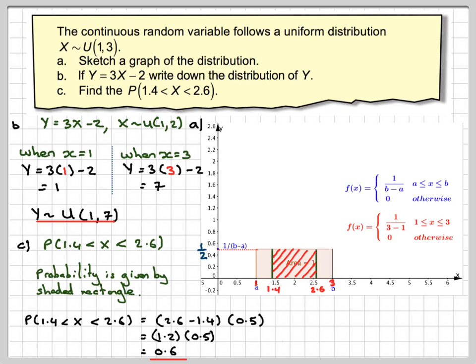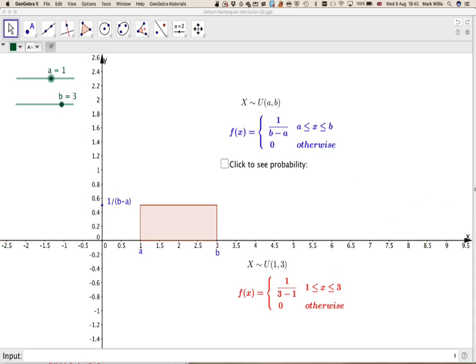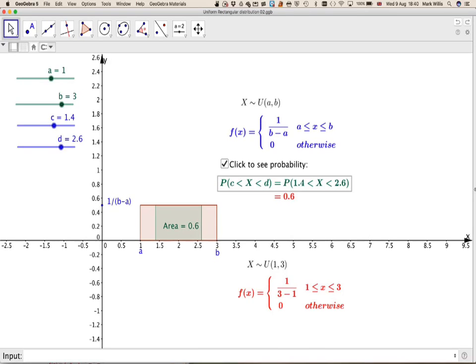That also can be represented on the GeoGebra applet. If you click here, it will give you the probabilities. And you can change the probabilities using these sliders if you wanted to. Just make sure you don't go off the function. And again, we can see we've got an answer of 0.6.